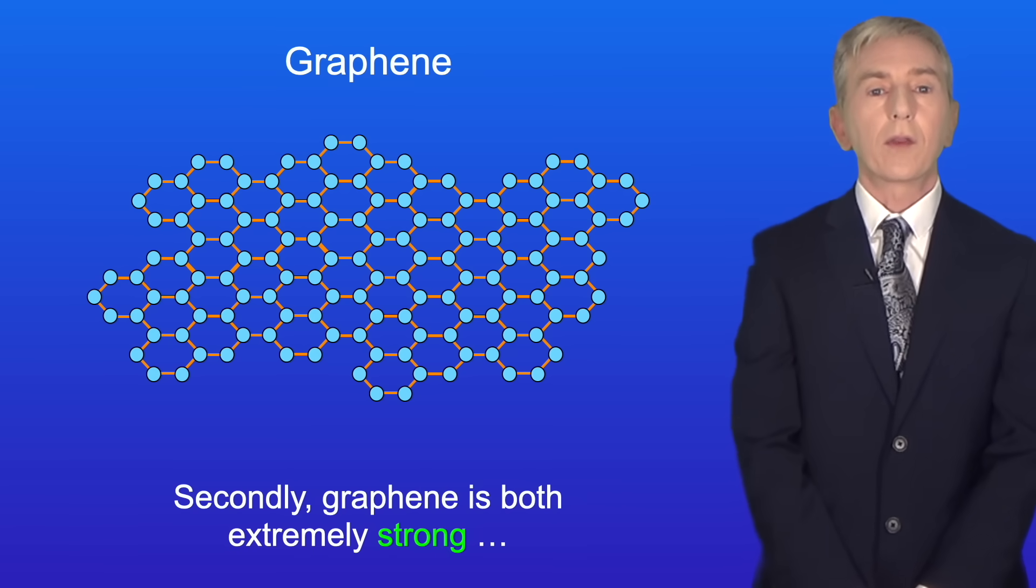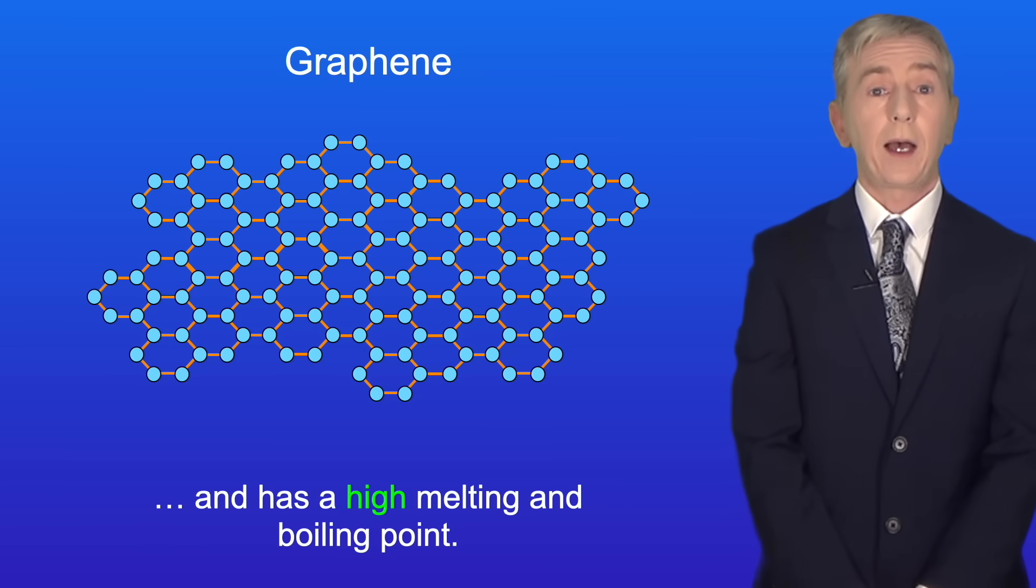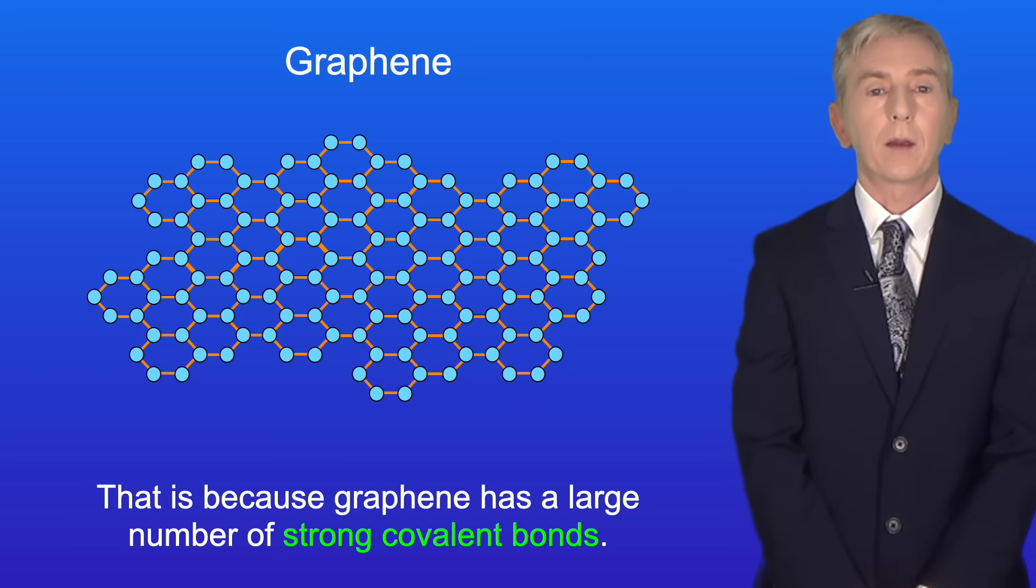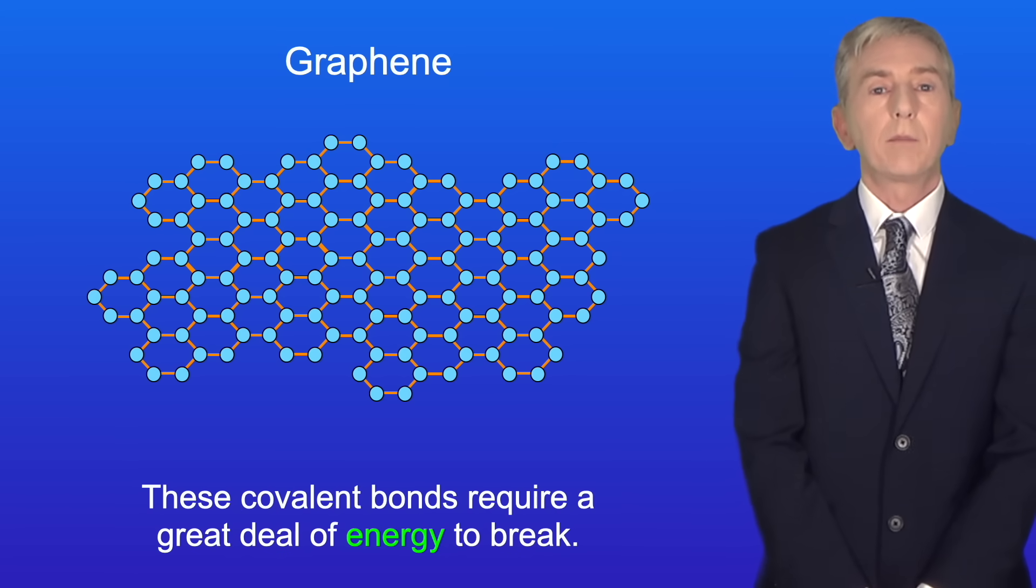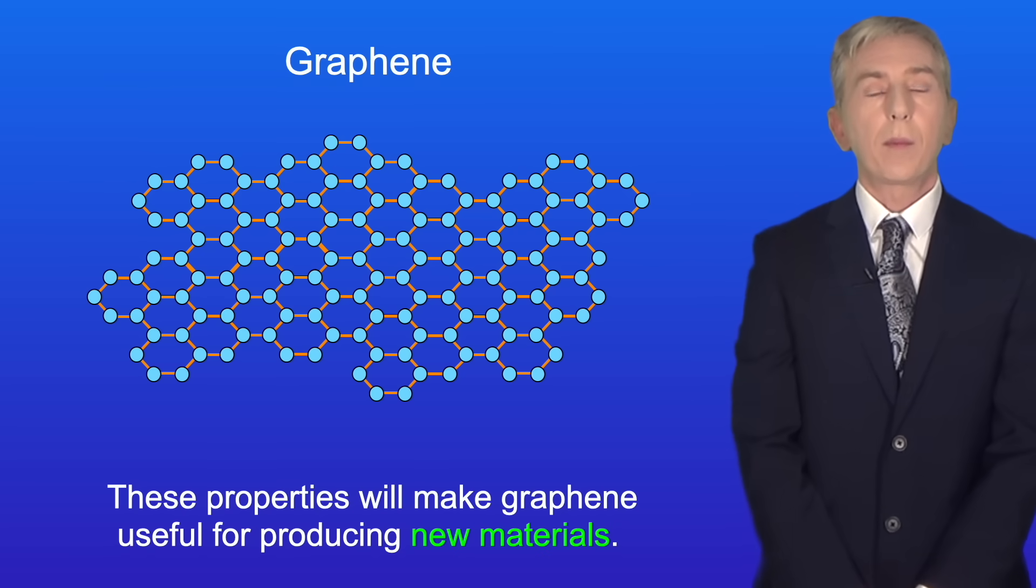Secondly, graphene is both extremely strong and has a high melting and boiling point. That's because graphene has a large number of strong covalent bonds. These covalent bonds require a great deal of energy to break. These properties will make graphene useful for producing new materials.